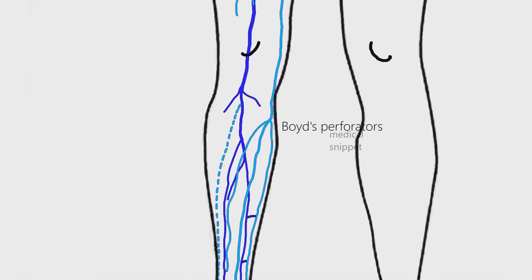Boyd's perforators are located just below the knee. They connect the greater saphenous vein to the deep veins.